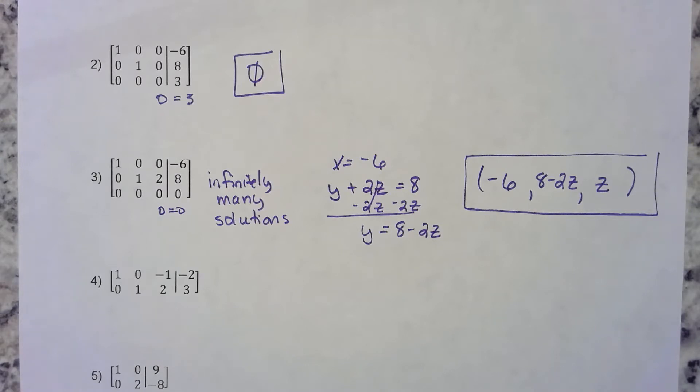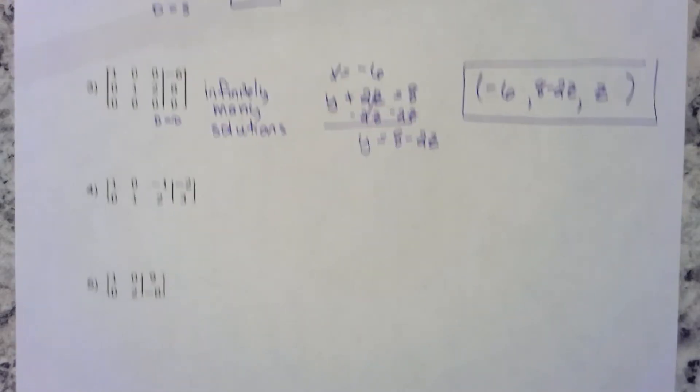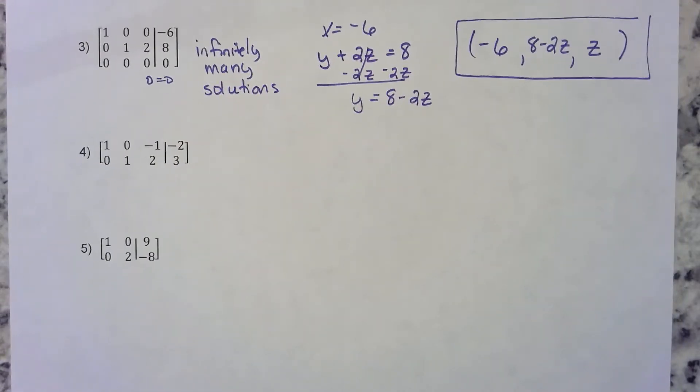What about this next one? What does it mean? You actually have two equations but you have three variables. What does that mean?